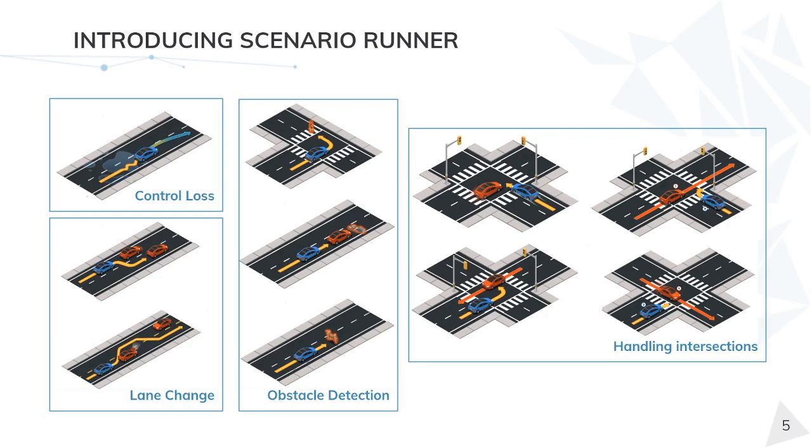Scenario Runner has several scenarios already implemented, which have been taken from the NHTSA pre-crash typology. These can be generally divided into four groups: control loss, dealing with lane changes, detecting obstacles in the road, and handling all types of situations related to intersections.